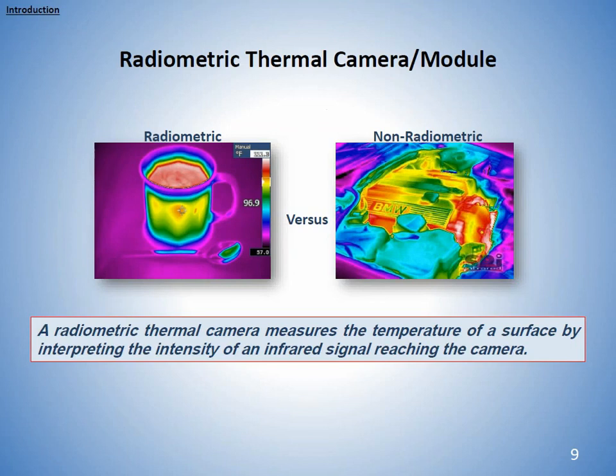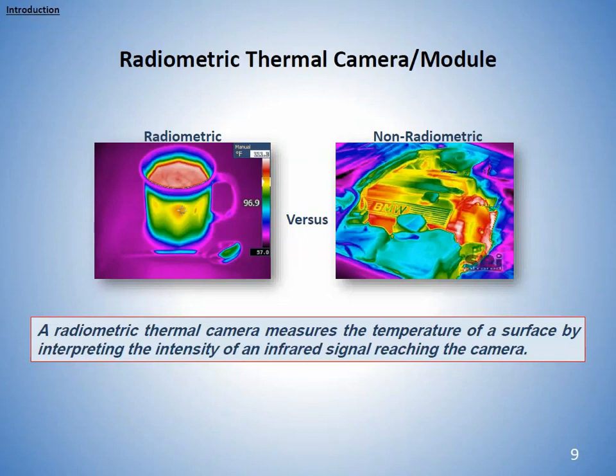An important point: what we need for agriculture applications is what's called a radiometric thermal camera. Non-radiometric cameras — like those used in the security industry — provide a false color image where you can see the difference between temperatures, but you don't know what the actual temperature is. In a radiometric thermal camera, on the other hand, it tells us what the temperature of each individual pixel is.